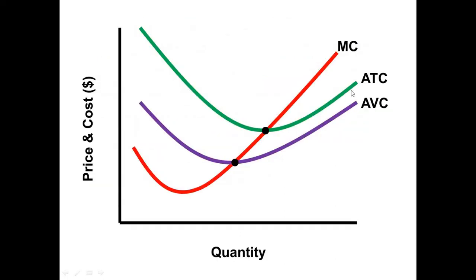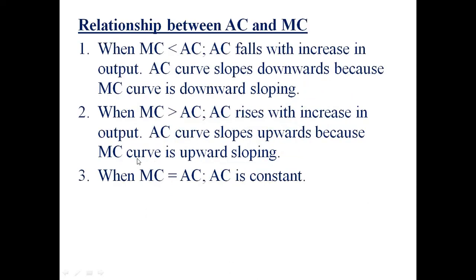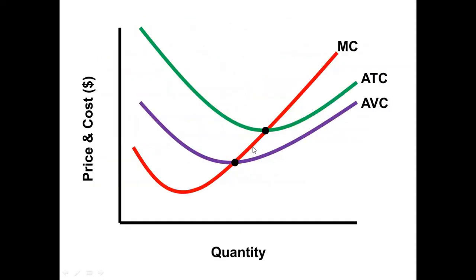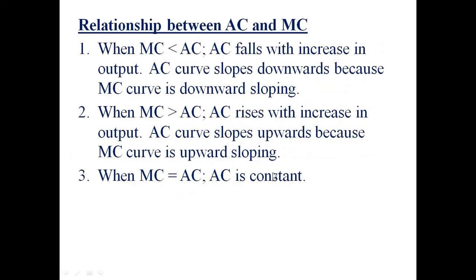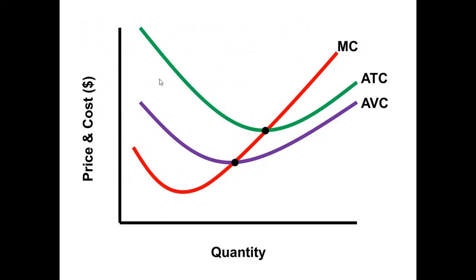Second: when MC is more than AC, the AC curve increases with increase in output because MC is also upward sloping. Third: when MC equals ATC, AC is constant. Please note that AC and ATC refer to the same thing — whether you say average cost or average total cost, they mean the same.